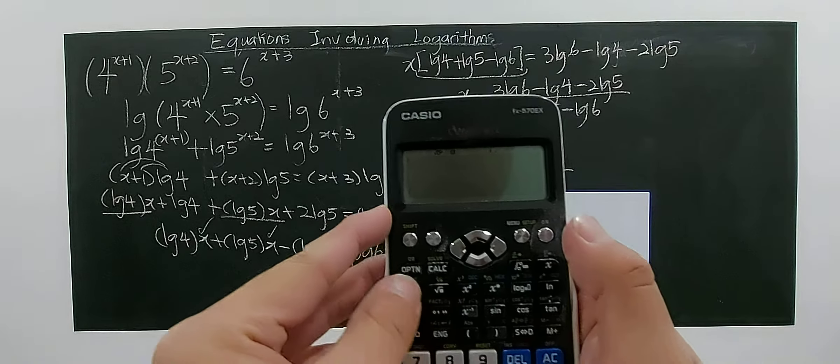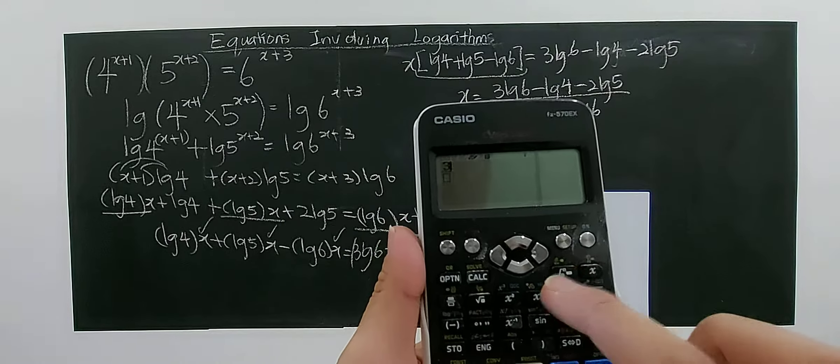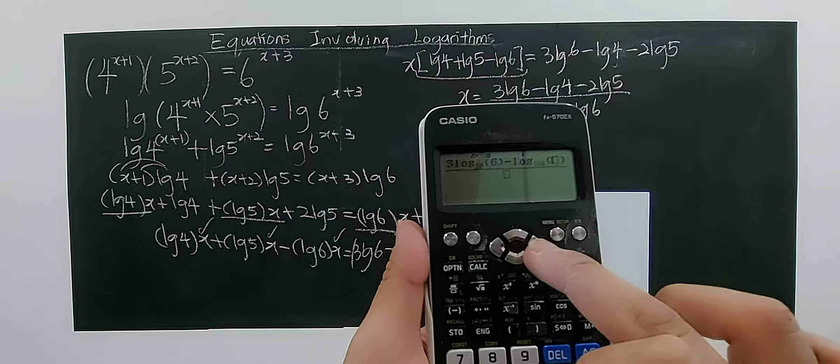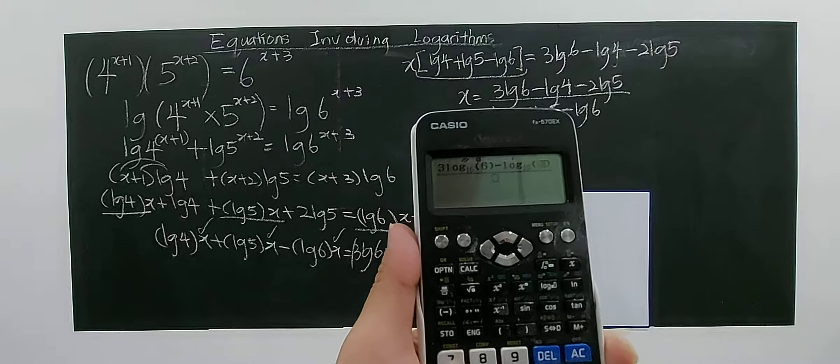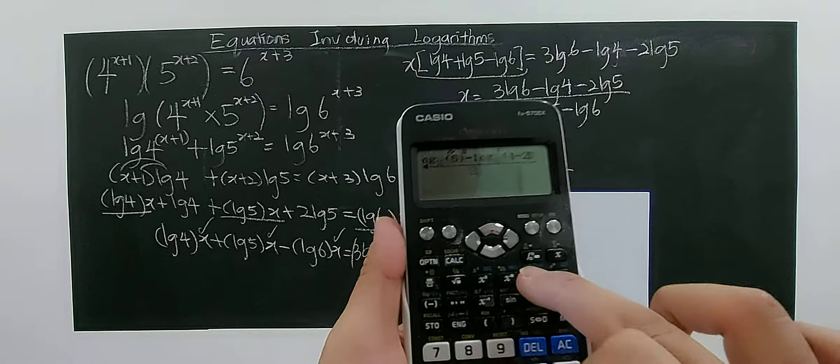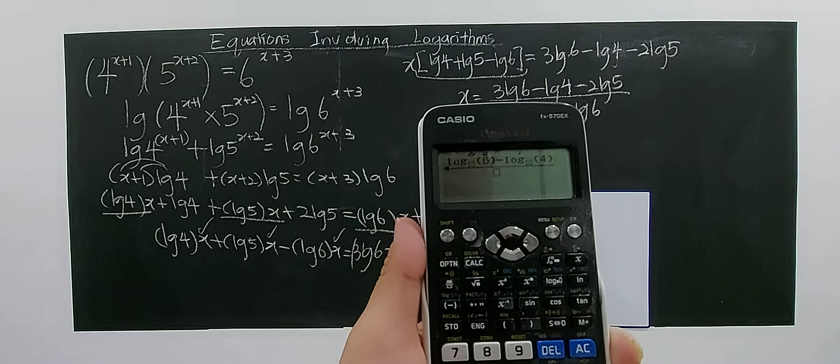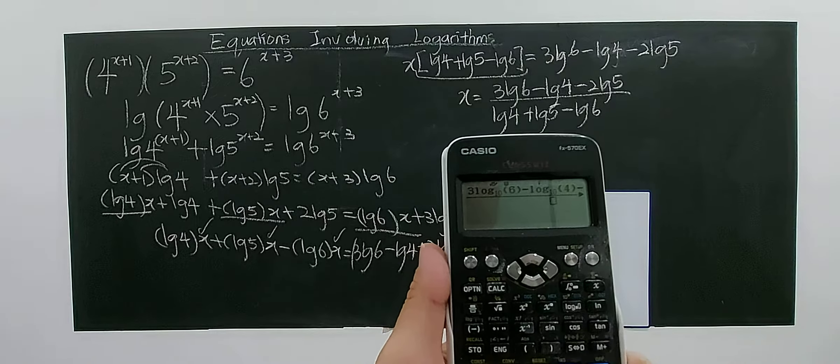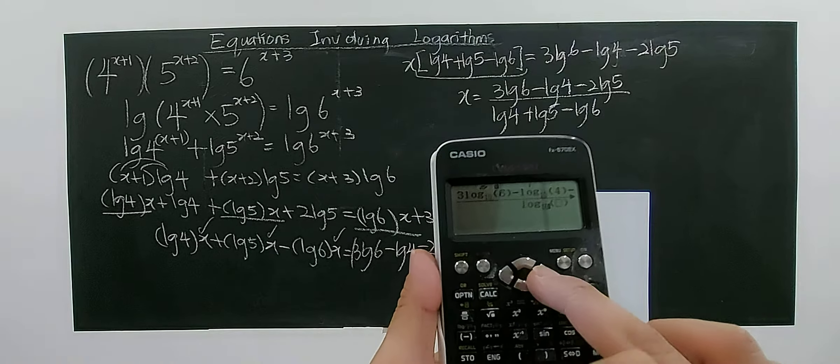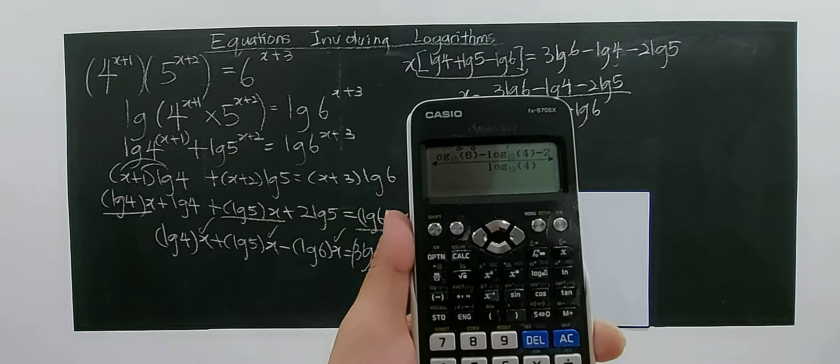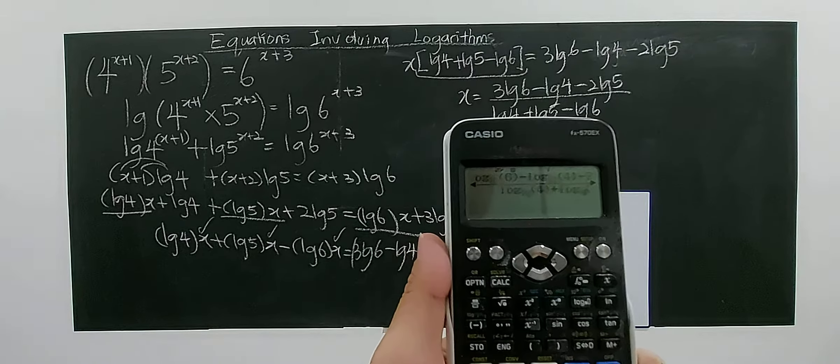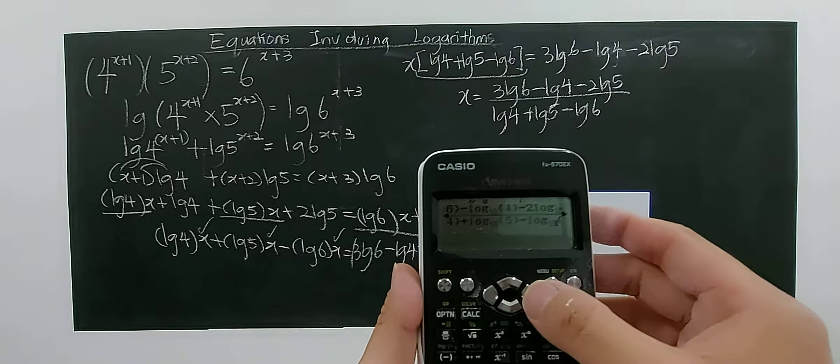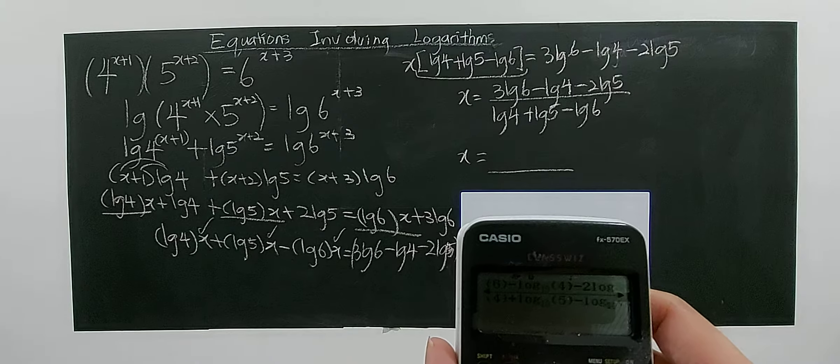Key in: 3log₁₀6 minus log₁₀4 minus 2log₁₀5, all divided by log₁₀4 plus log₁₀5 minus log₁₀6. This is tedious; you need to key in each term one by one. You can double-check your solution and how you keyed it in.